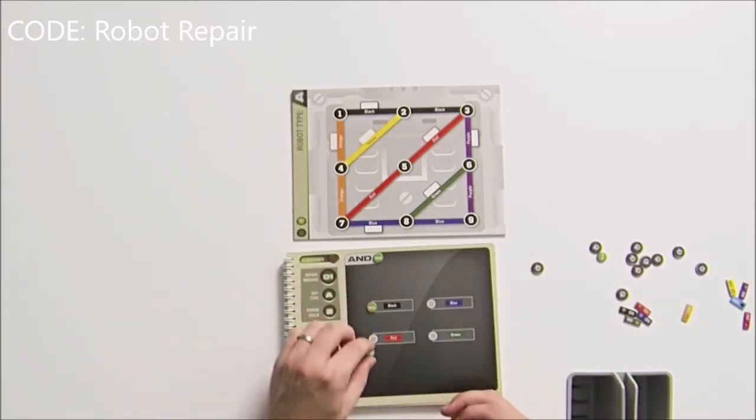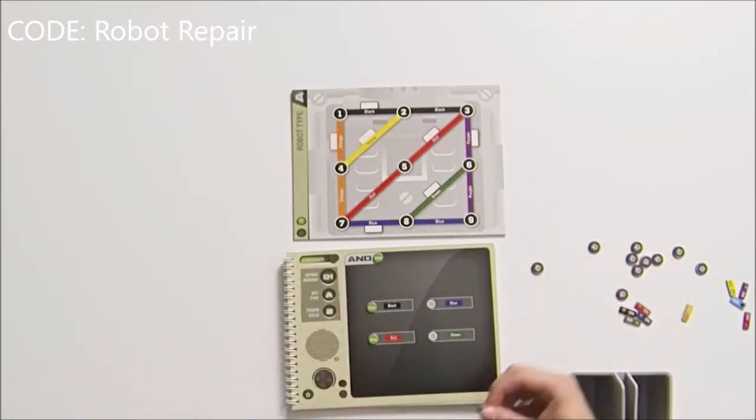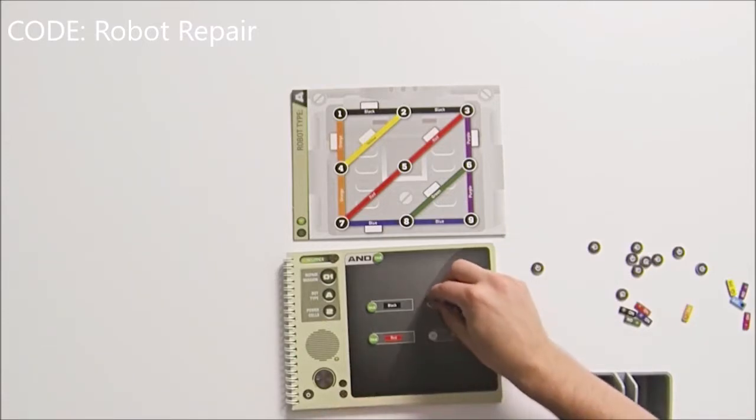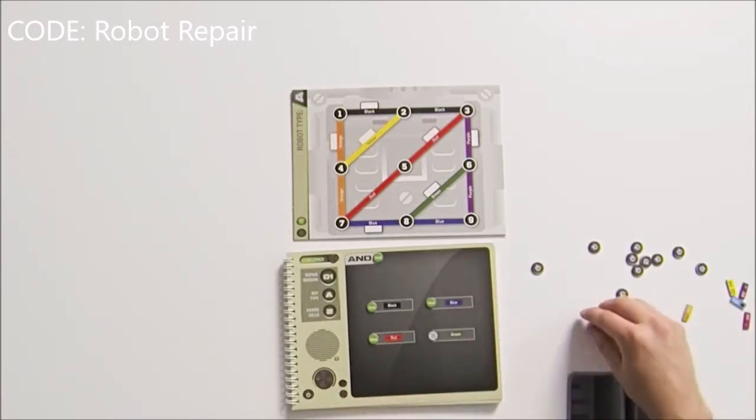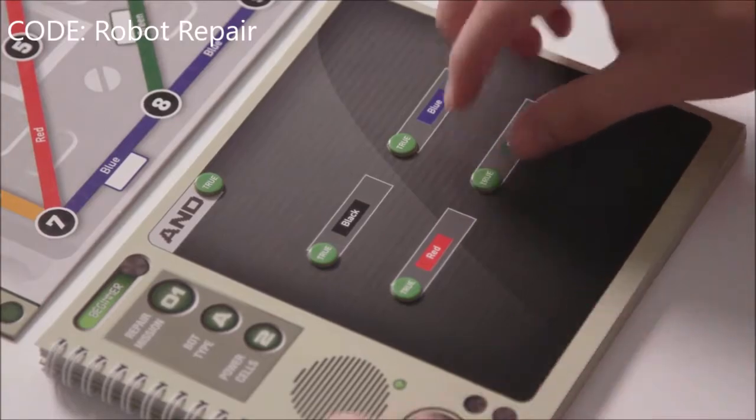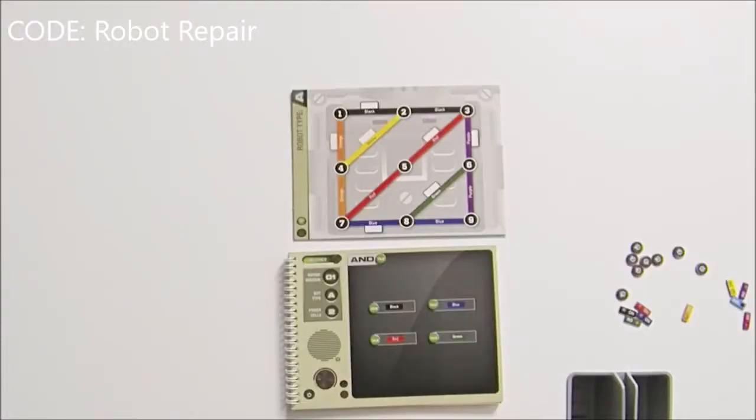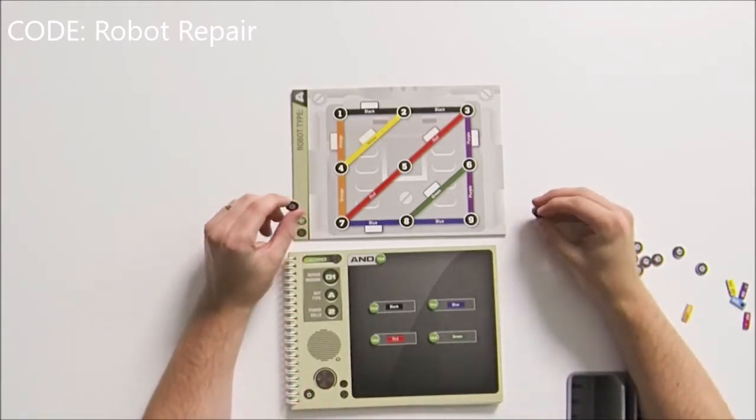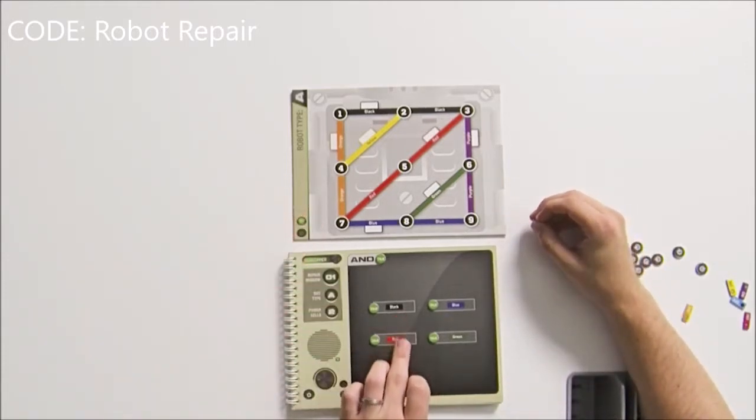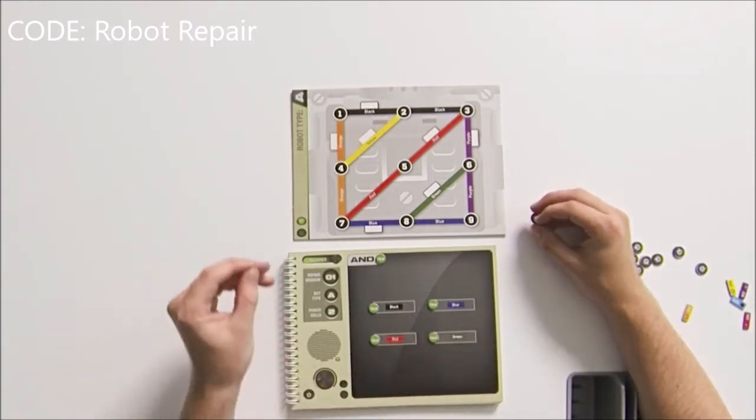So we can track our progress by using our true false tokens and putting them on the clue panel. Our challenge card tells us that we can only use two power cells in order to solve this puzzle, so we need to find a place to put each of these power cells in order to light up each wire determined by the clue statements.